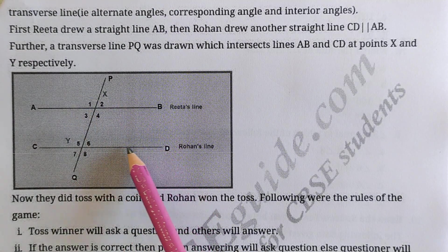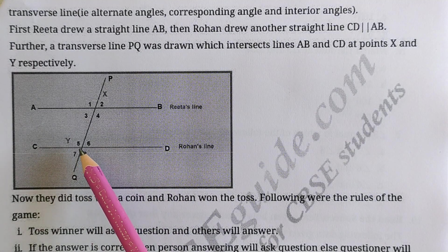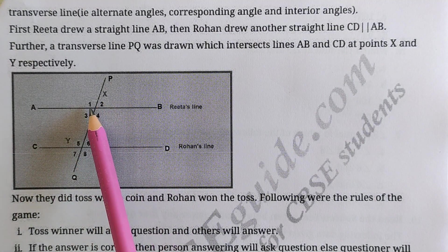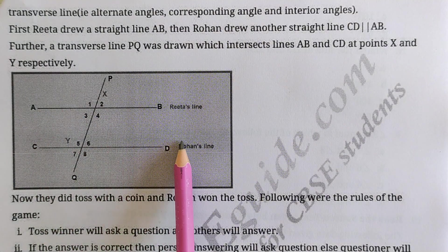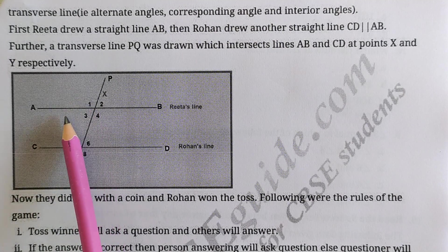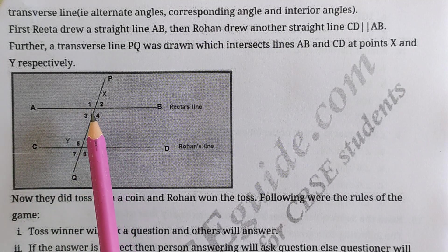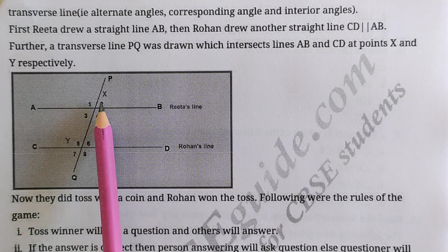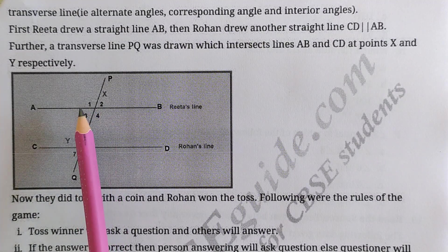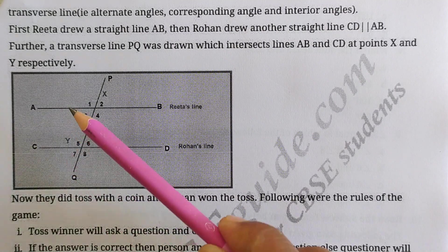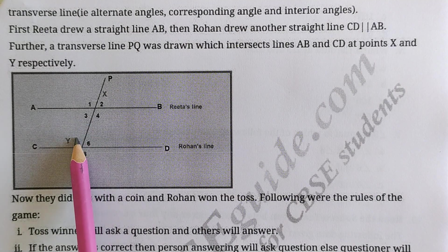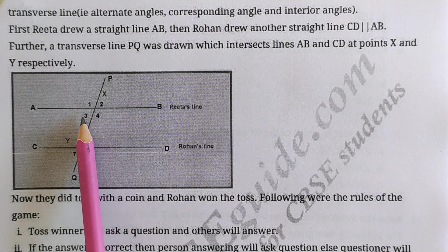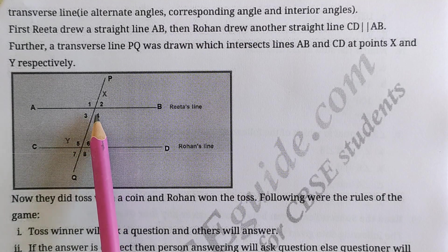So we have eight angles formed. When AB and CD are parallel and PQ is the transversal, eight angles are formed. Of these, four are exterior angles and four are interior angles. Angles 1, 2, 7, 8 are the four exterior angles because they are on the outside. Angles 3, 4, 5, 6 are the interior angles because they are on the inside.